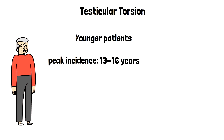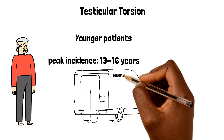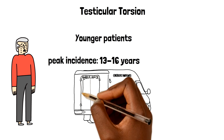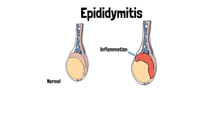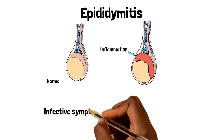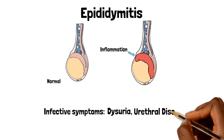If we suspect testicular torsion, these patients should be urgently referred or admitted due to complications such as ischemia and necrosis of the testicle. Now, when we look at epididymitis, patients with this condition will present with infected symptoms such as dysuria, a urethral discharge, a fever, and also increased urinary frequency.